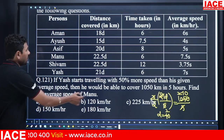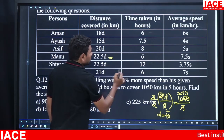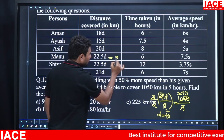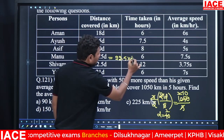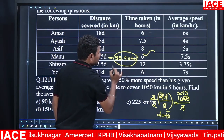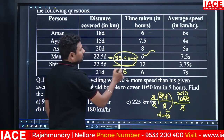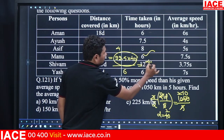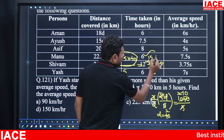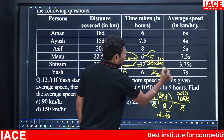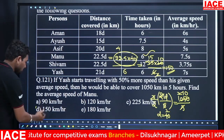Next, find the average speed of Manu. Manu covers 22.5D in 6 hours. Substituting D = 40: 22.5 × 40 / 6. Writing 22.5 as 45/2, we get 45 × 20 / 6. Simplifying: 3 × 50 = 150 kmph. Option D is correct.